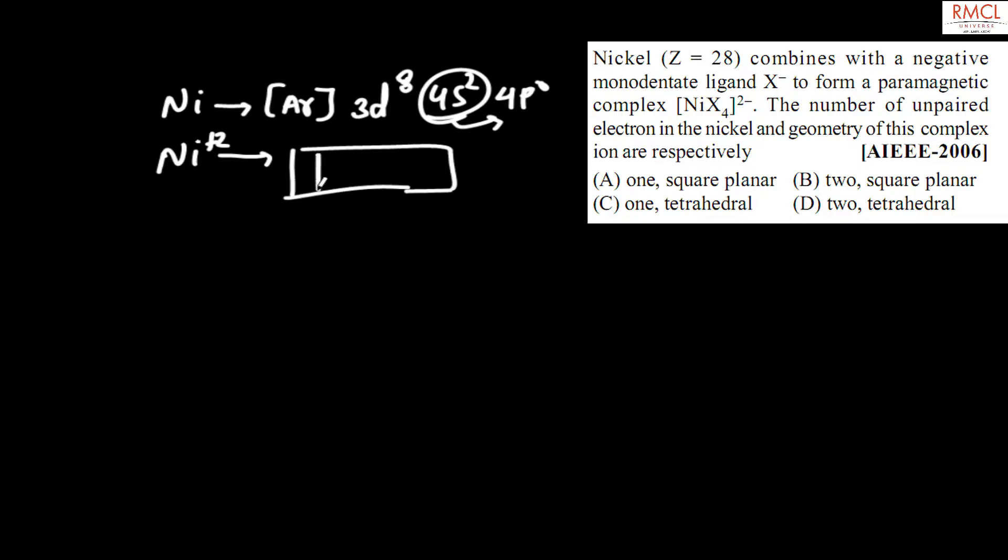In the d orbital, 8 electrons are present. Filling the five d orbitals: 1, 2, 3, 4, 5, then 6, 7, and 8, giving two unpaired electrons.